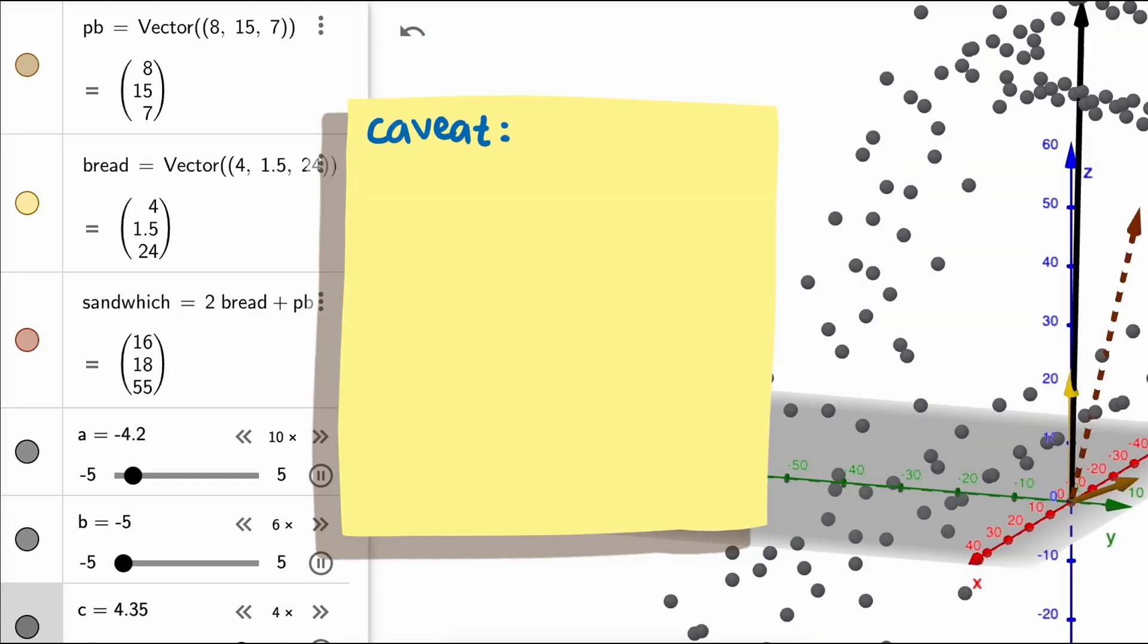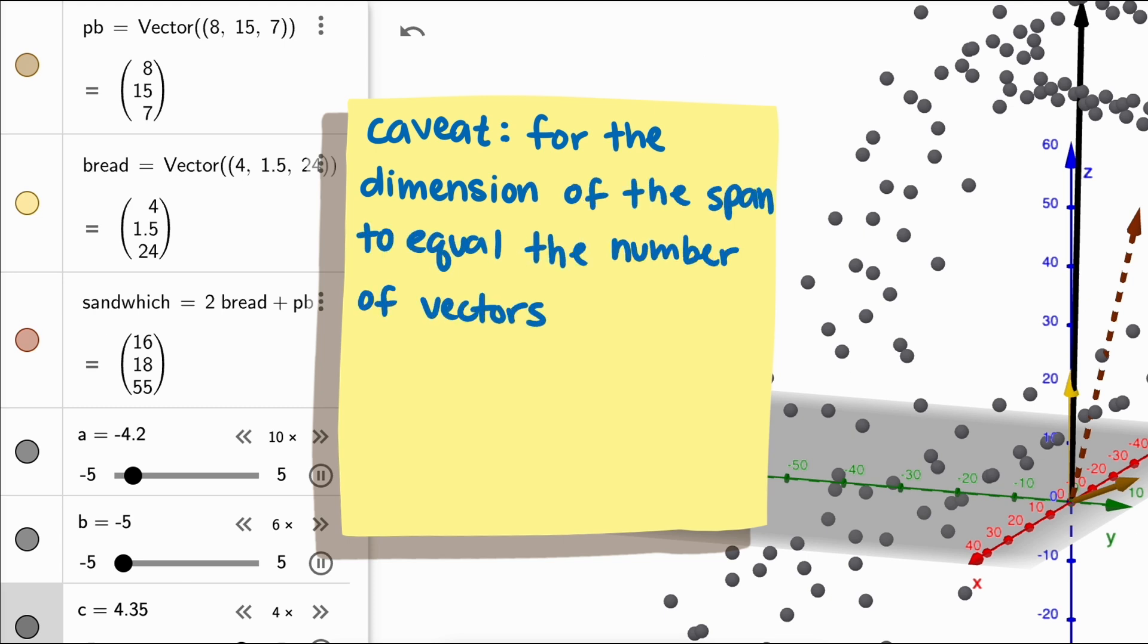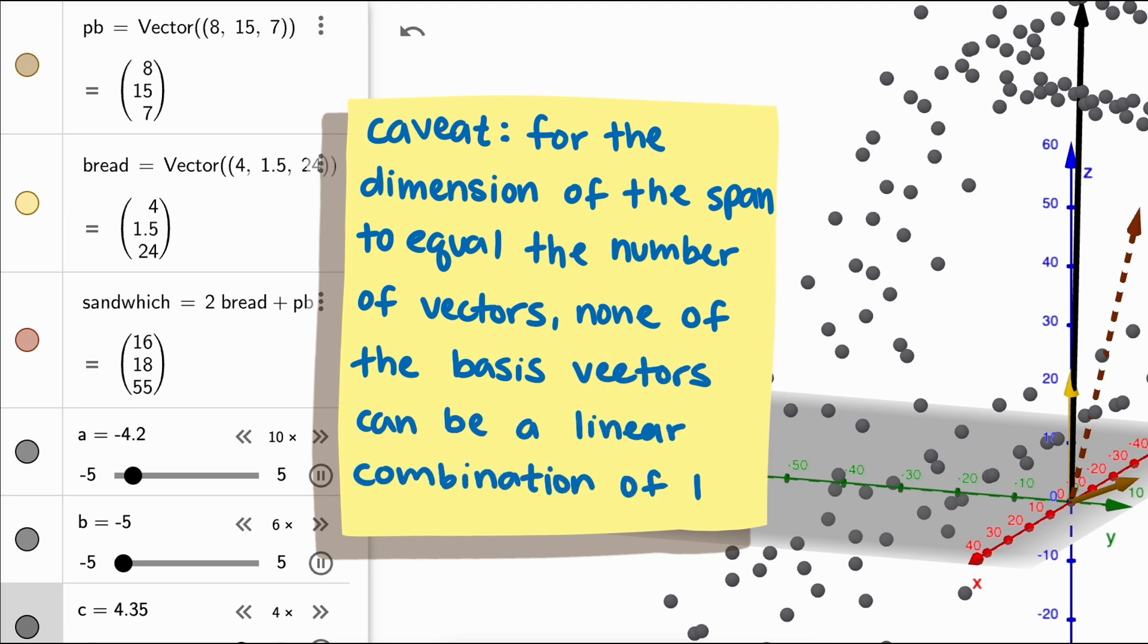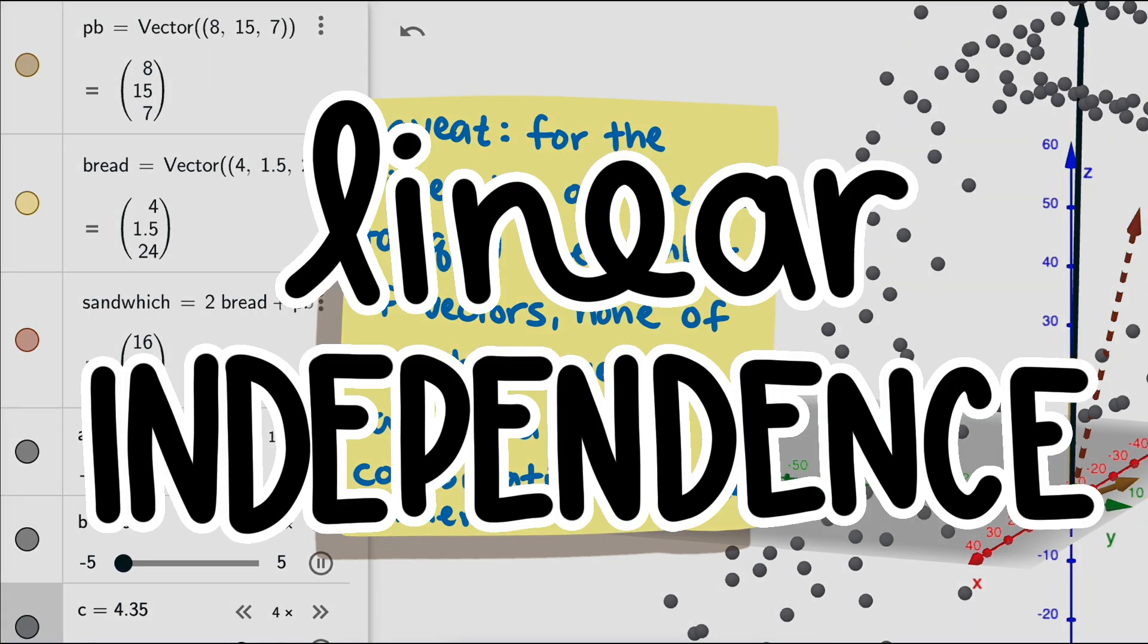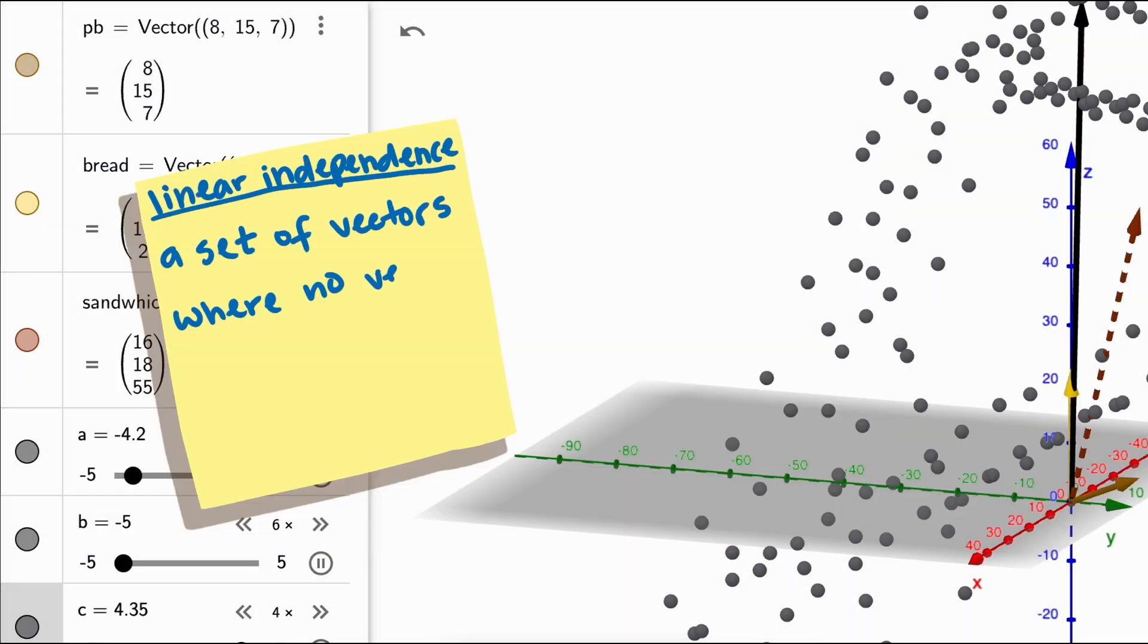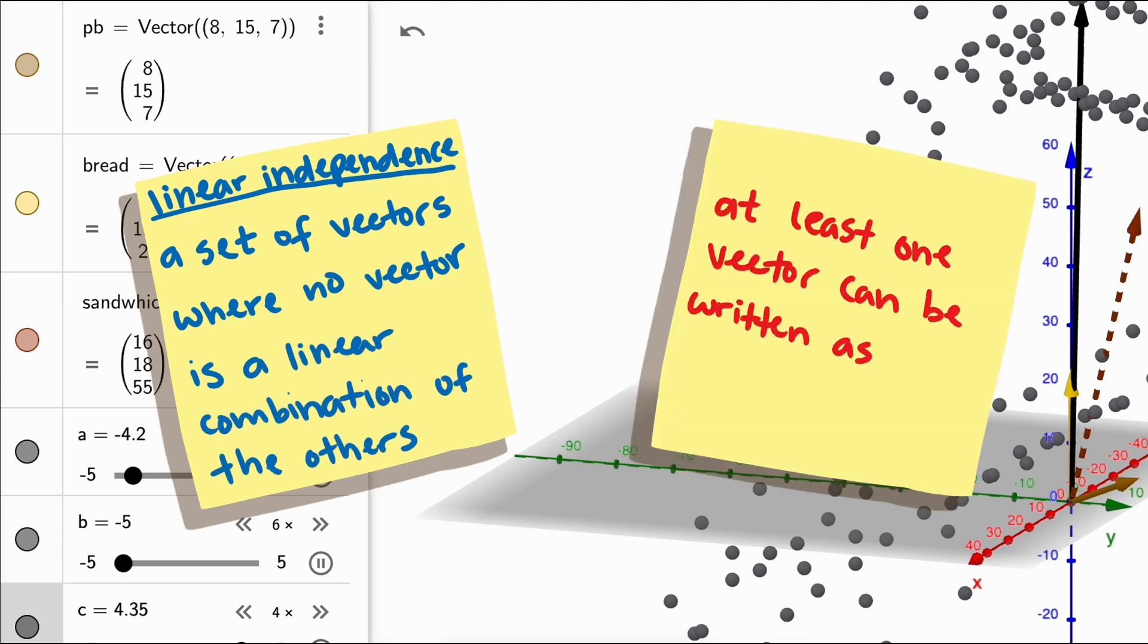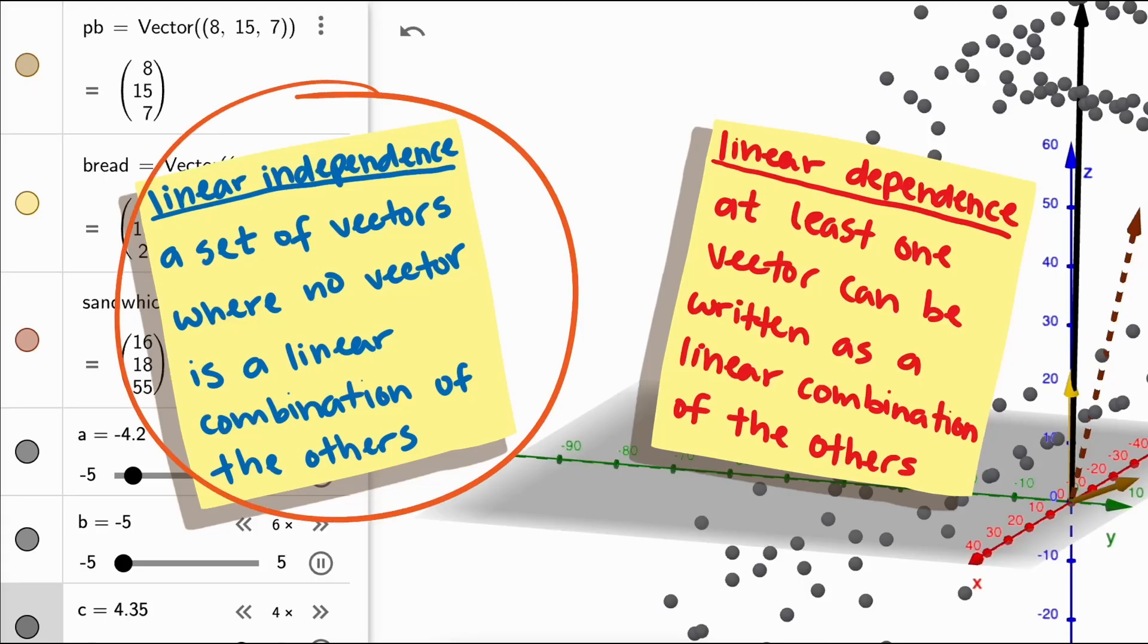So our strategy for solving best approximation problems has a caveat. It seems that in order for the dimension of the span to equal the number of vectors, none of our basis vectors can be the linear combination of others. Mathematicians call this property linear independence. A set of vectors where no vector is a linear combination of the others is a linearly independent set of vectors. If at least one of them can be written as a linear combination of the other ones, it is called a linearly dependent set. This is one of the most important ideas in linear algebra. Sets that are independent vectors have different properties and usually nicer properties than sets with dependent vectors.